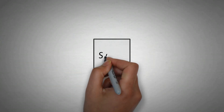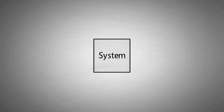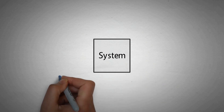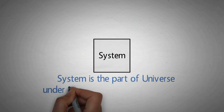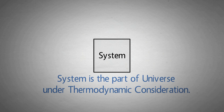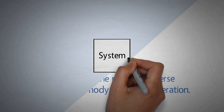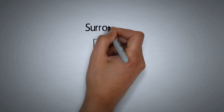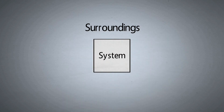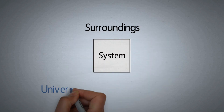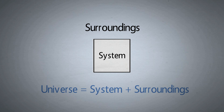So let's start our discussion with our first term: system. System is the part of universe under thermodynamic consideration. यह वो part है जिस पर हम pressure, temperature जैसे parameters के effect को study करते हैं। अब system के अलावा जो कोई भी part बचे उसे हम surrounding कहते हैं। So equation के form में: universe is equal to system plus surrounding.